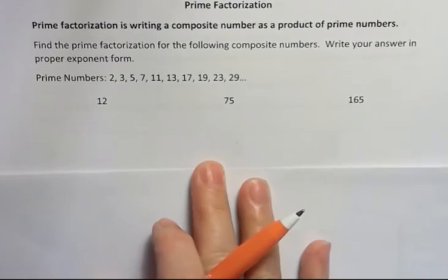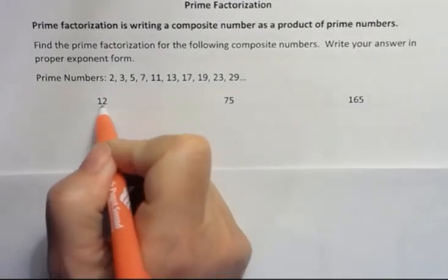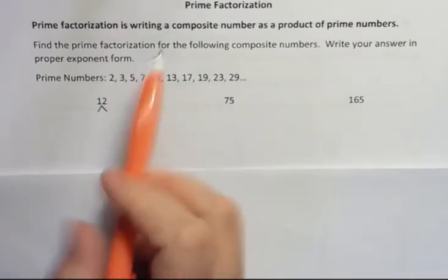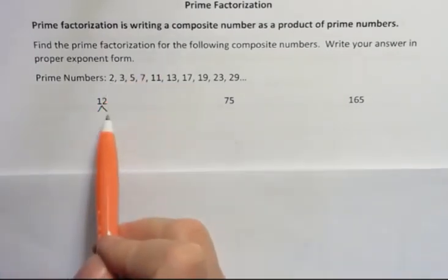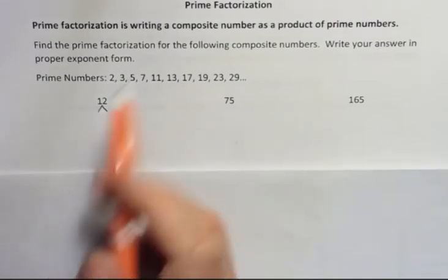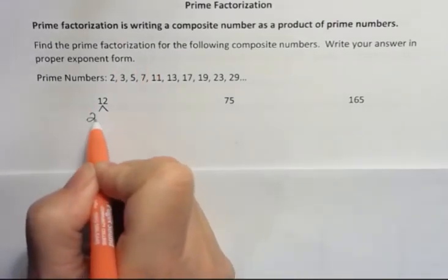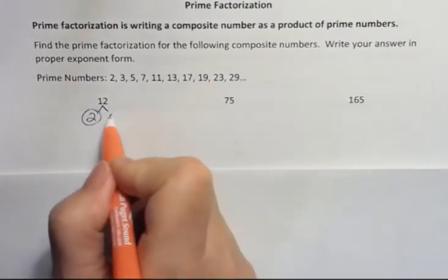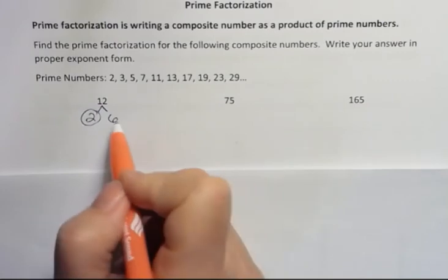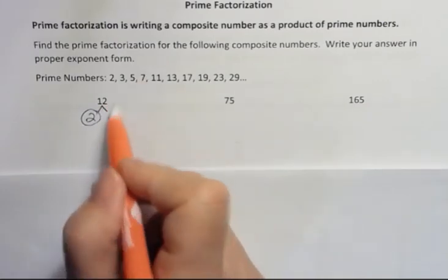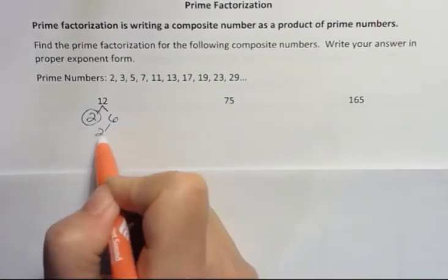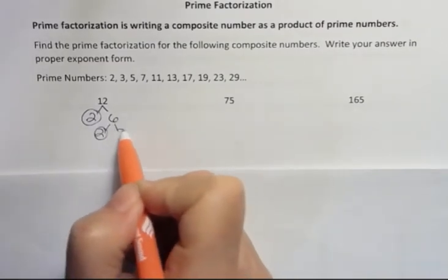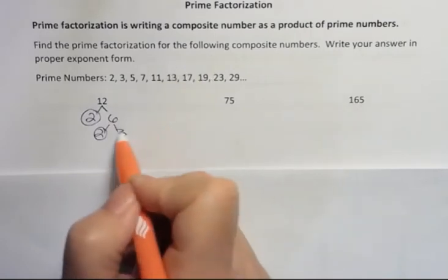So the prime factorization of 12, I'm going to use the tree method, which you might remember from somewhere else. But what I want to do is start with the lowest prime number possible and say, does that prime number go into this number? And it does because it's even. And when I get a prime number, I'm going to circle it. How many times does 2 go into 12? 6 times. And 6 is not prime, so I need to keep going. Does 2 go into 6? Yes. I'm going to circle it because it's prime. How many times does 2 go into 6? 3. Is 3 prime? Yes. I'm done.